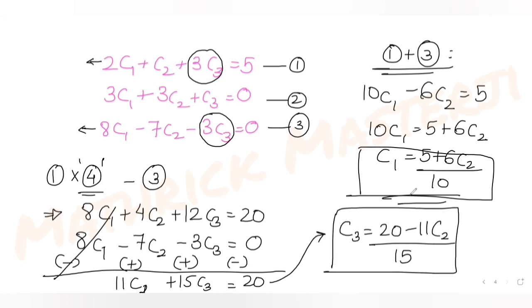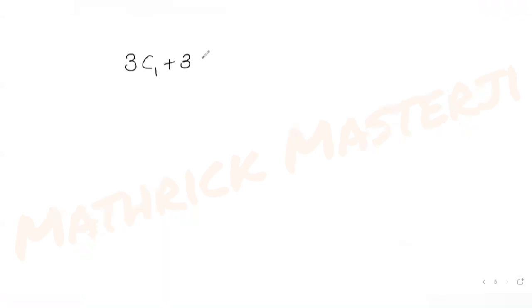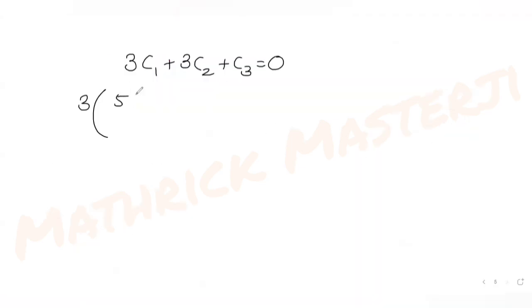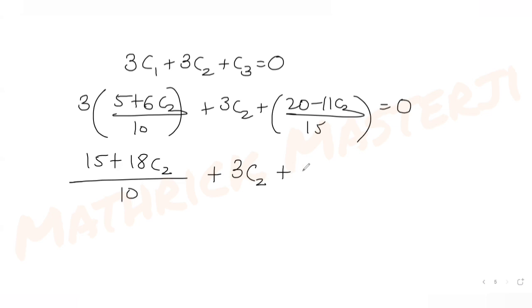Substituting c1 and c3 into equation (2): 3·[(5 + 6c2)/10] + 3c2 + [(20 − 11c2)/15] = 0, which gives (15 + 18c2)/10 + 3c2 + (20 − 11c2)/15 = 0.